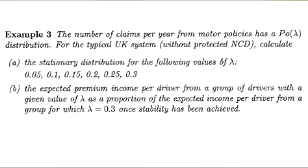Okay so we've got a number of claims from motor policies each year has Poisson distribution with some parameter lambda. We're going to look at the typical UK system as defined by Jean Lemaire, not with protected no claims discount. We're going to work out the stationary distribution for six values of lambda and then in part b we're going to look at this idea of how well the system discriminates between good drivers, I guess lambda is 0.05 would be a good driver on this scale, and the bad drivers where lambda is 0.3.